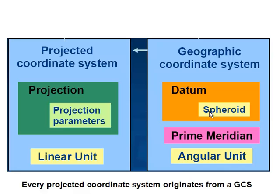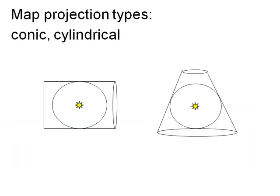Our first coordinate system will be called the Alaska-Albers coordinate system. It uses a cone that's wrapped around the globe, and that cone is going to touch the globe in two locations. This is how most planar coordinate systems work — they're basically some sort of geometry around the globe, such as a cylinder or a cone touching the globe. For this coordinate system, the cone touches the globe at two locations called standard parallels.